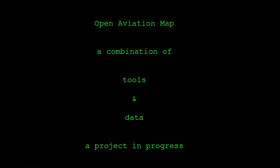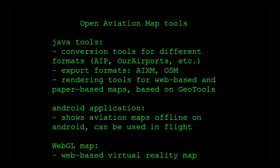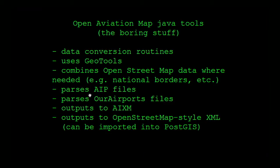So what is this project about? It's a combination of tools and data, and it's a project very much in progress. We have a set of Java tools which are conversion tools from various formats into an OpenStreetMap-style PostGIS database. We can also export to AIXM, which is a new XML format championed by the FAA and Eurocontrol. We have rendering tools which can draw the maps, we can draw paper maps with different projections including Lambert Conic and Mercator. We have an Android app so you can use it in flight, and a WebGL-based prototype which is a 3D representation running in a browser.